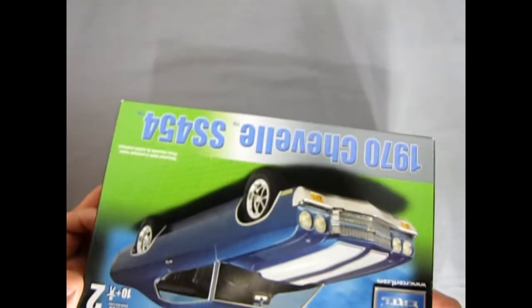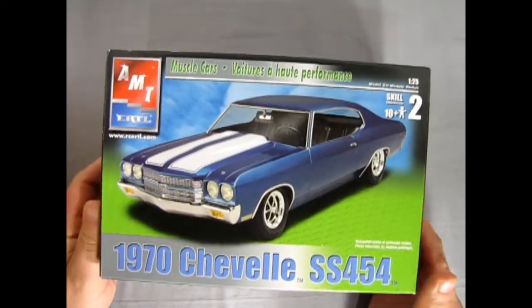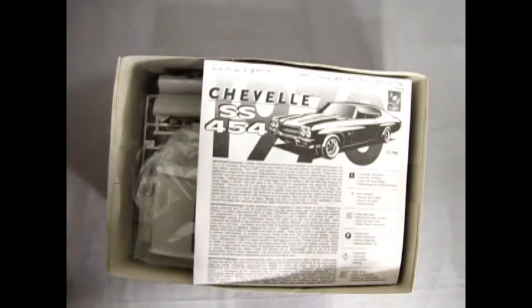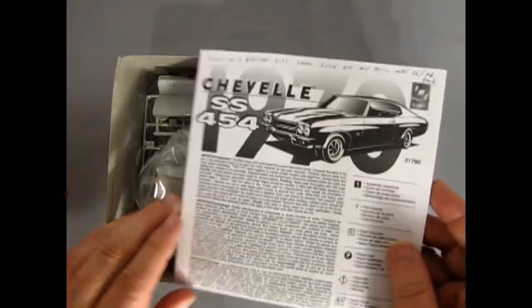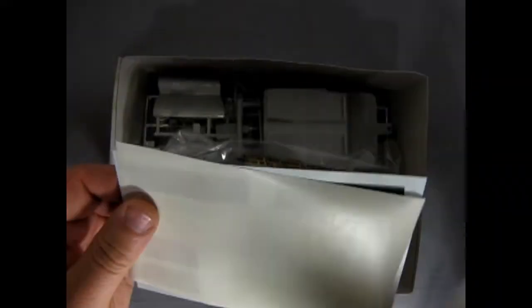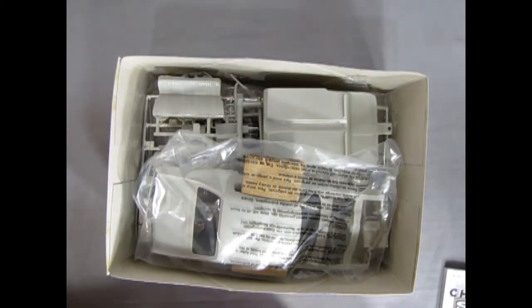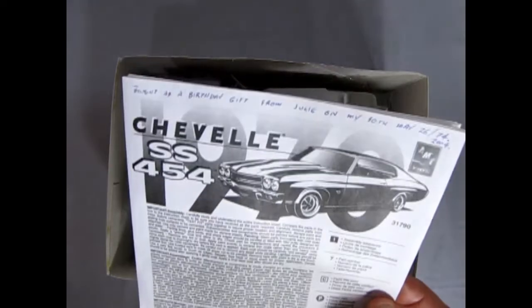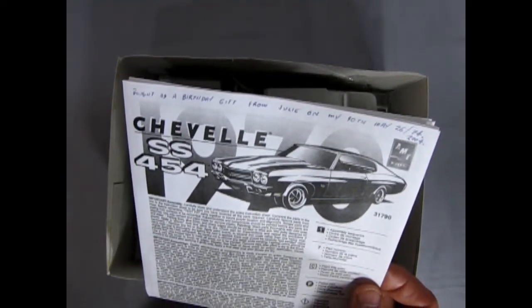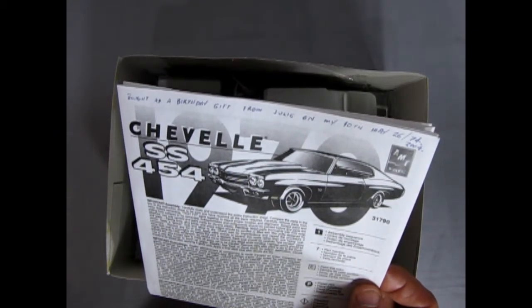So now we'll just turn our kit around here and let's take the lid off our Chevelle. Here we get confronted with our instruction sheet just like so. Inside I've got the decals, something nice for you. I bought this kit actually as a birthday gift from Julie on my 30th birthday. Wow, so long ago when I was young.